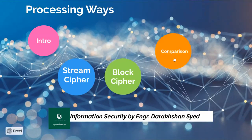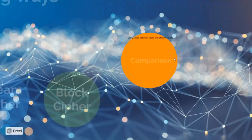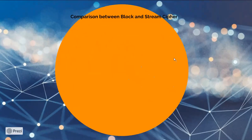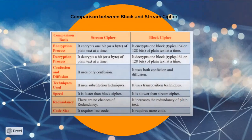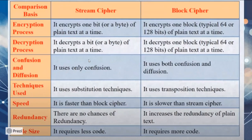So let me just conclude by performing some comparisons on block cipher and stream cipher. When you talk about the encryption process, stream cipher processes mainly one bit at a time, while as far as block cipher is concerned, one block is 64 or 128 bits.